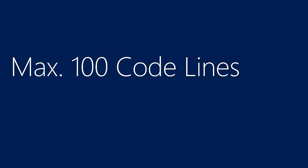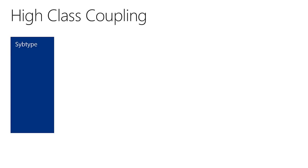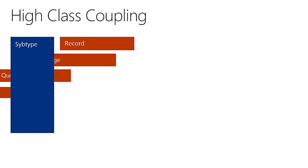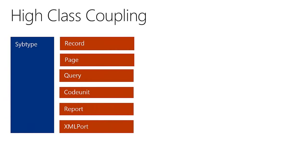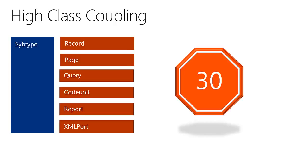A function should never have more than 100 lines of code. Also avoid high class coupling — each variable of the type record, page, query, code unit, report, and XML port counts as 1, and each function should only contain a maximum of 30.